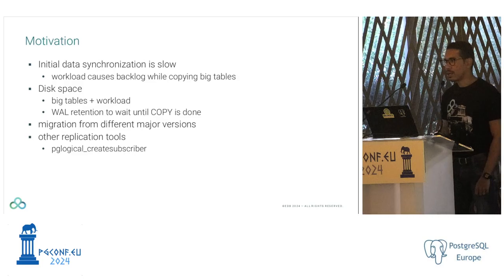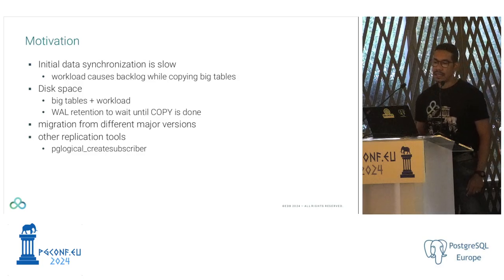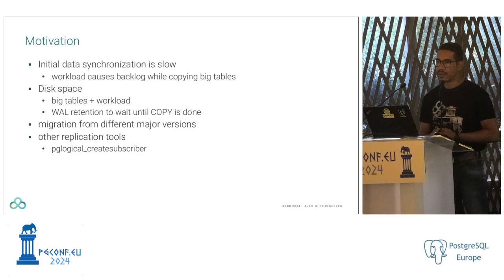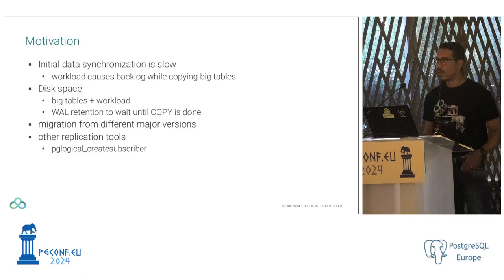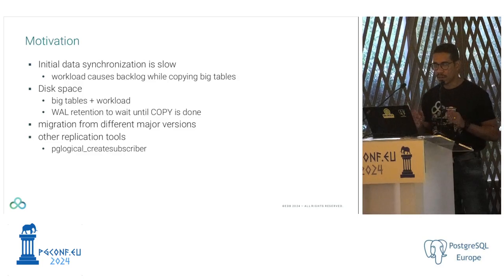Today we're going to talk about one of my patches for Postgres. The main motivation is that the logical replication setup, depending on your workload, the initial data synchronization is slow. The main reason is caused by the workload, and also because we have a huge backlog that we need to keep up with. We also have problems related to disk space, because big tables require us to retain the WAL until we have everything copied, and then we can apply the backlog.